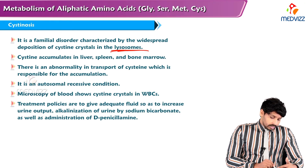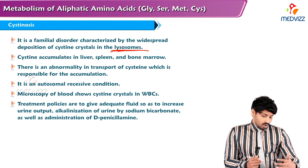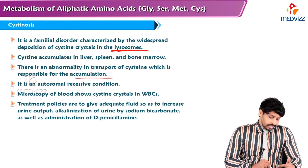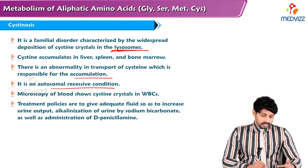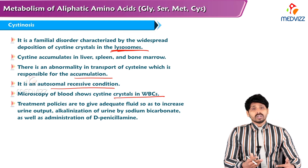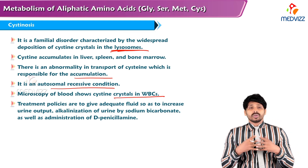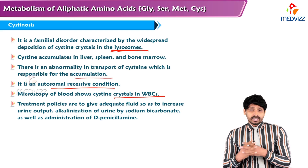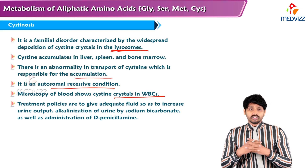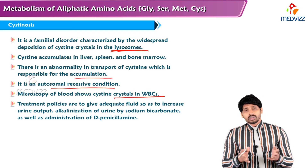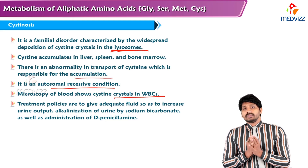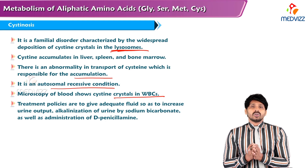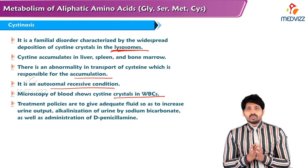Cystinosis is a familial disorder characterized by widespread deposition of cysteine crystals in the lysosomes. Cysteine accumulates in liver, spleen, and bone marrow due to abnormality in transport of cysteine. It is an autosomal recessive condition; microscopy of blood shows cysteine crystals in WBCs. Treatment includes adequate fluid intake, alkalinization of urine with sodium bicarbonate, and administration of D-penicillamine.